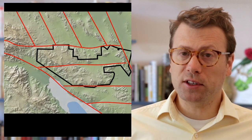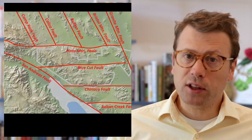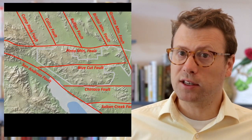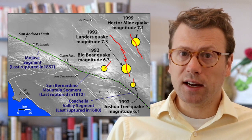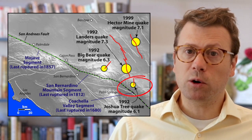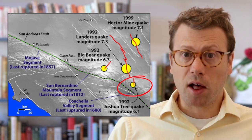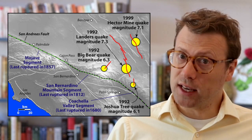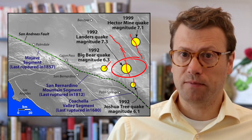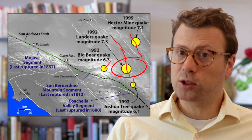Almost all of the faults in the Eastern California Shear Zone are currently active and produce small earthquakes every day. The last really big earthquake in the National Park was in 1992 with the magnitude 6.1 Joshua Tree earthquake, followed a couple months later by the magnitude 7.3 Landers earthquake, whose epicenter was located just north of the park. One of the coolest things about the Eastern California Shear Zone is that it might represent the birth of a new plate boundary.